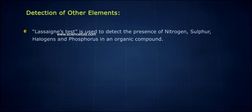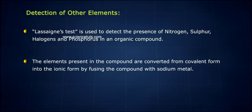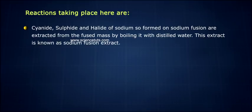Detection of Other Elements. Lassaigne's test is used to detect the presence of nitrogen, sulfur, halogens, and phosphorus in an organic compound. The elements present in the compound are converted from covalent form into ionic form by fusing the compound with sodium metal. The cyanide, sulfide, and halide of sodium so formed on sodium fusion are extracted from the fused mass by boiling it with distilled water. This extract is known as sodium fusion extract.